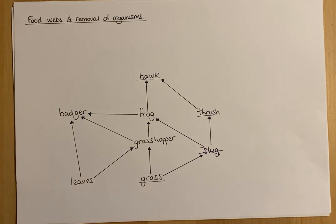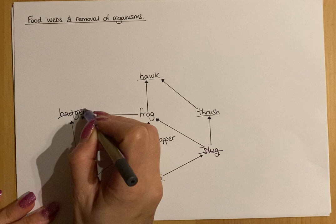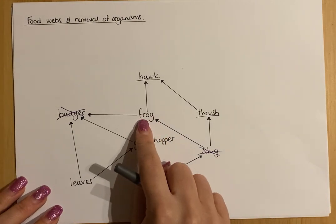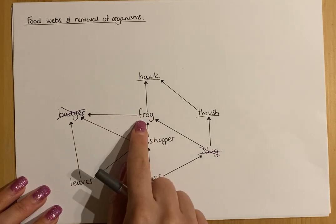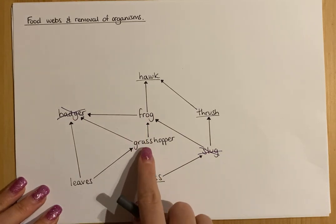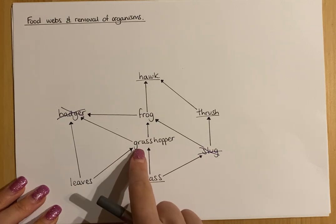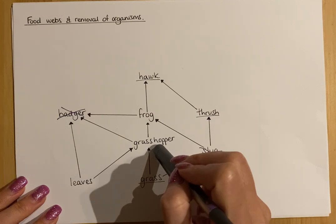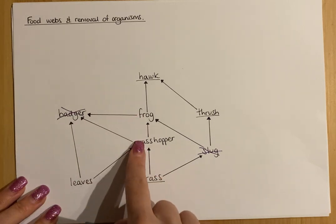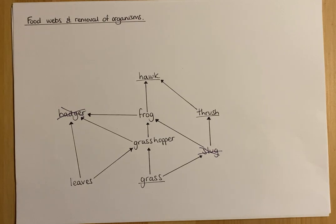For another example, if the badger was killed off and you were asked about the effect on frog numbers: the frog is no longer being eaten by the badger, so frog numbers might go up. You could further justify that grasshopper numbers might also go up because there's no badger eating them, but equally grasshopper numbers could stay the same because there are now more frogs eating them. There are multiple valid ways to explain these answers.